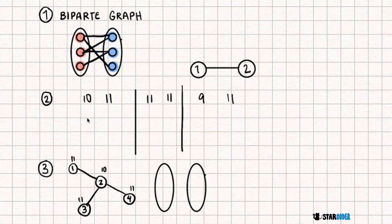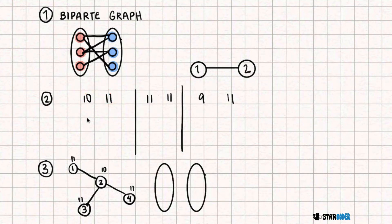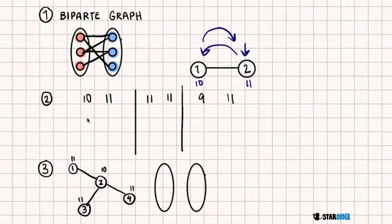Now that we know this, we can create a bipartite graph. Let's look at a brief example. Let's assume we only have two nodes, one and two, and consider different scenarios. First, let's assume they have a difference of one between them. In that case, Bessie can start on the bigger one — let's say we have 10 and 11 — and move between the rooms until one or both reach 12. Let's say we start at room two.